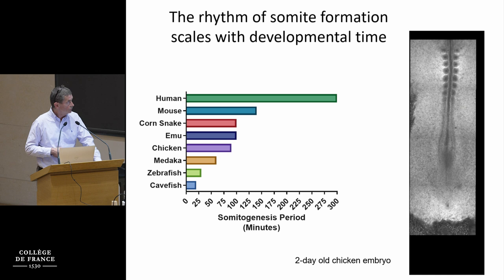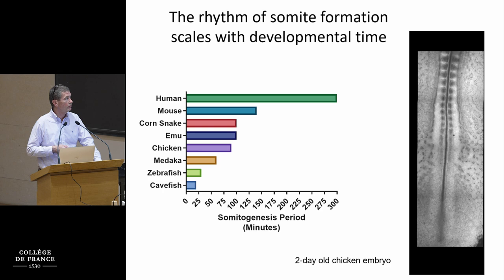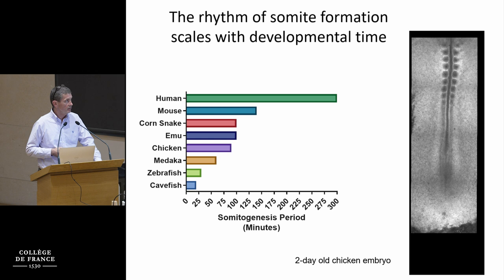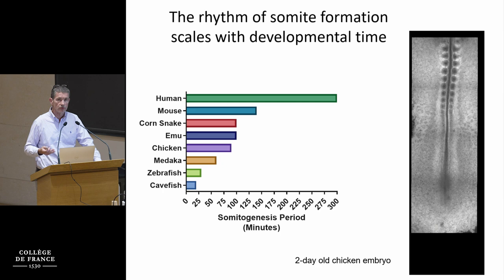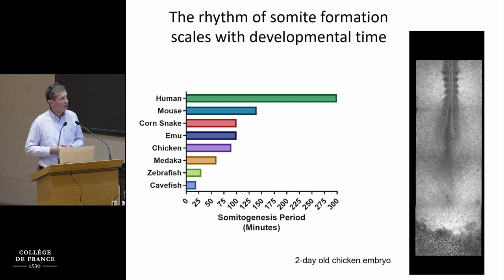The somite period is also quite different between species. Human embryos develop slowly, so they have a slower somitogenesis period compared to mouse or zebrafish that have a very fast period and developmental time. Somites are added up to around 50 or 65 in mouse and up to several hundreds in some outliers like snakes. For a reasonable period of time, which also corresponds to the phylotypic stage, you can use this as a measure of time in embryos.